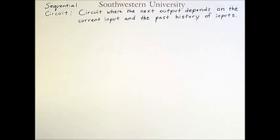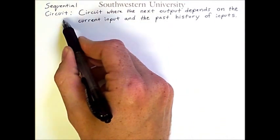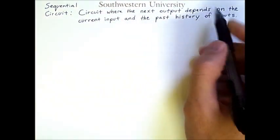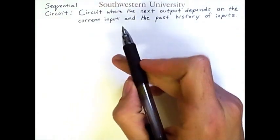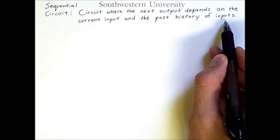In contrast to a combinational circuit, a sequential circuit is one in which the output depends not only on the immediate inputs but also on the past history of inputs. So we're no longer computing a boolean function per se, but rather seeing what output we get based on what inputs we had before.